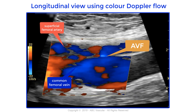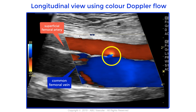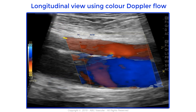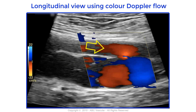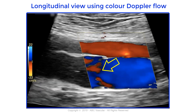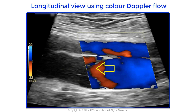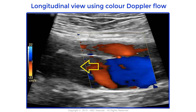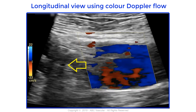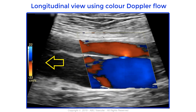The arteriovenous fistula is detected using color Doppler flow by the presence of color Doppler aliasing at this level. Flow enters from the superficial femoral artery into the common femoral vein via the fistula, therefore increasing the speed of flow within the common femoral vein, which becomes turbulent.